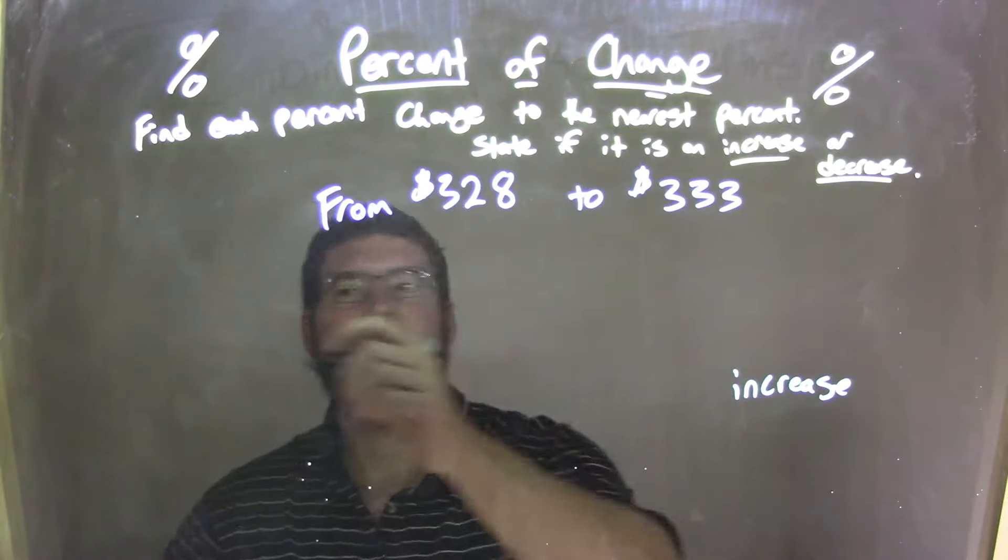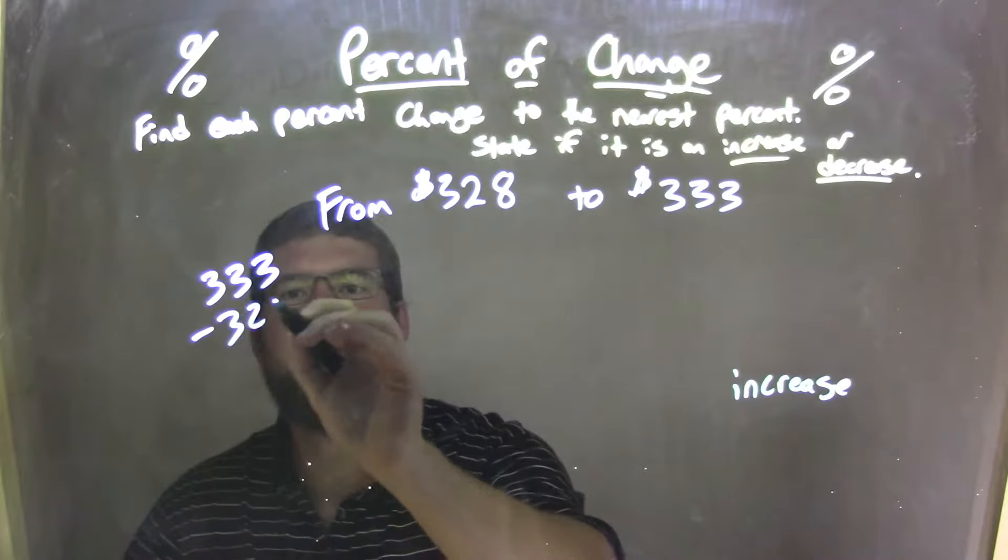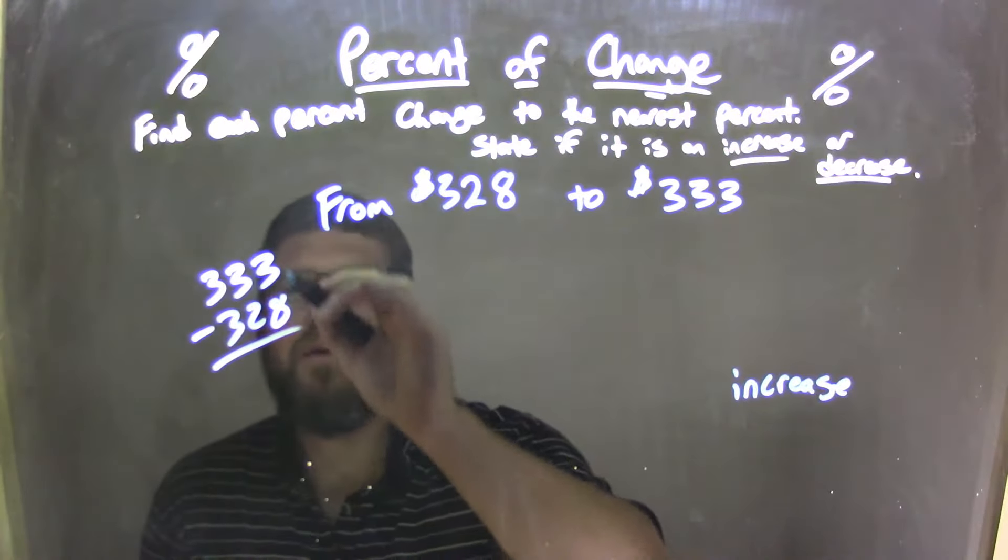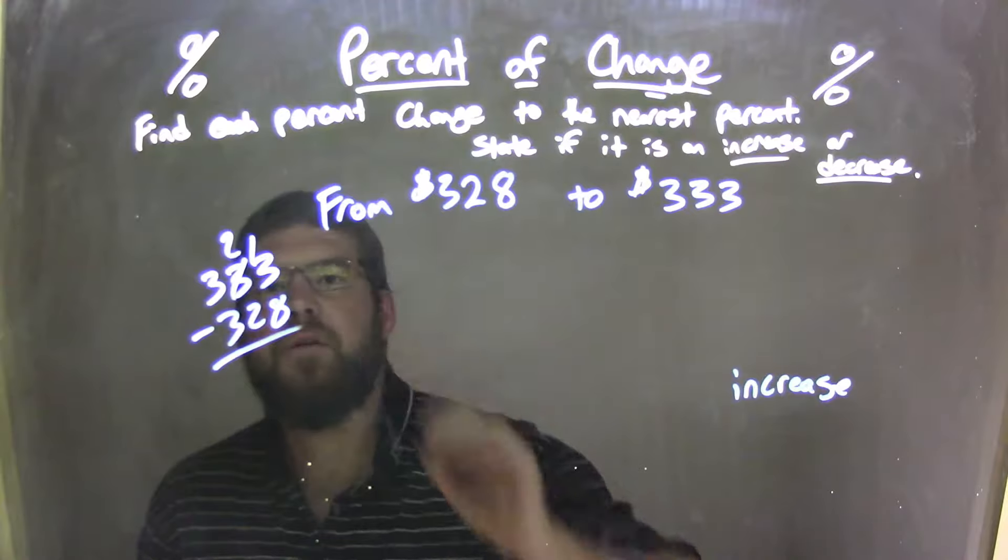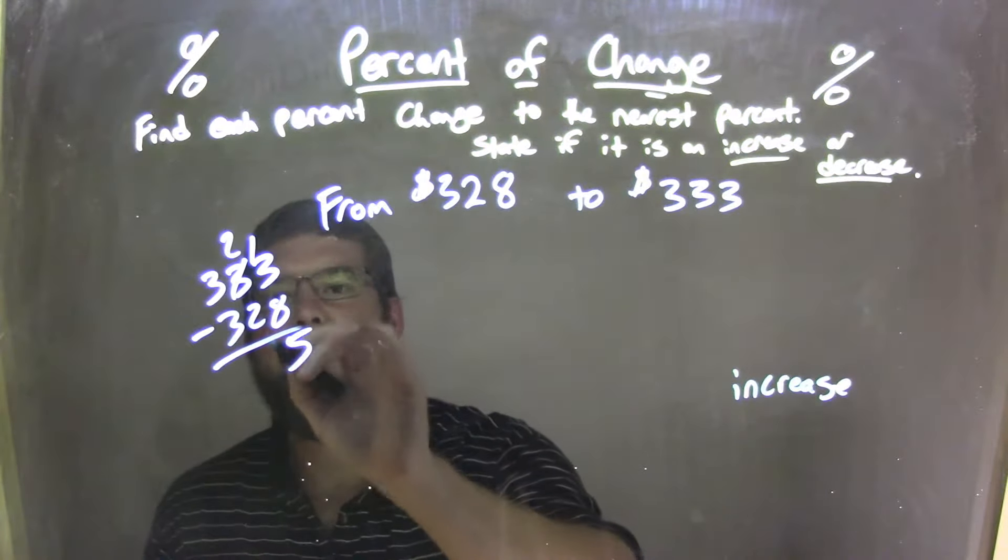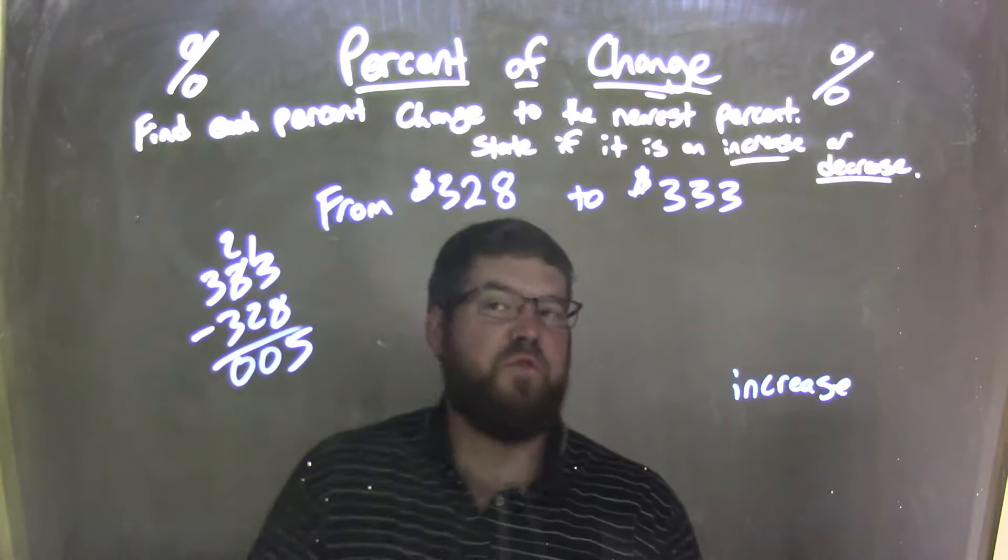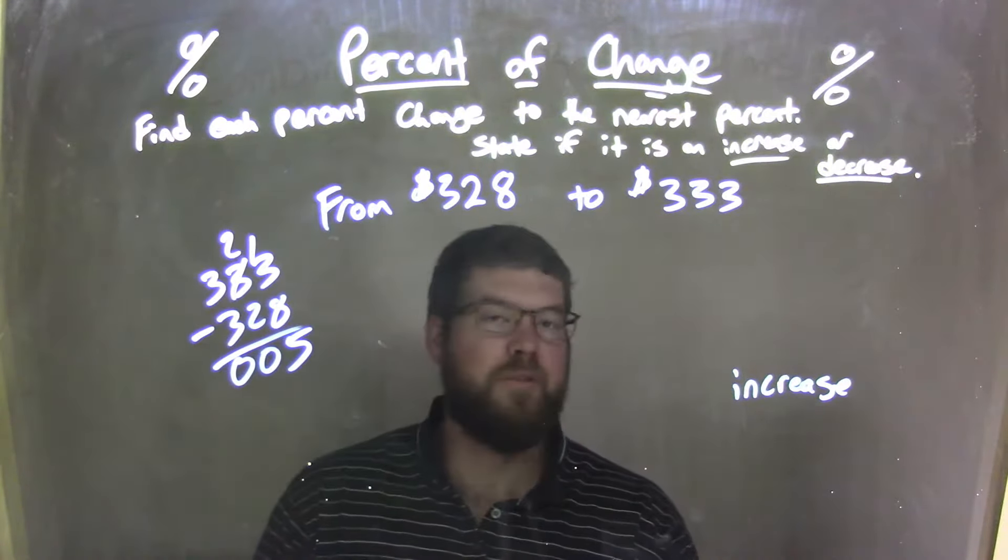Now we're going to find the difference between these two numbers. So I took the large number, $333, and I'm going to subtract $3.28 from it. $3 and $8 can't go together, so we have $2 here, $13. $13 minus $8 is $5. $2 minus $2 is $0, and $3 minus $3 is $0. So we actually have just $5. So $5 is the difference between these two numbers.